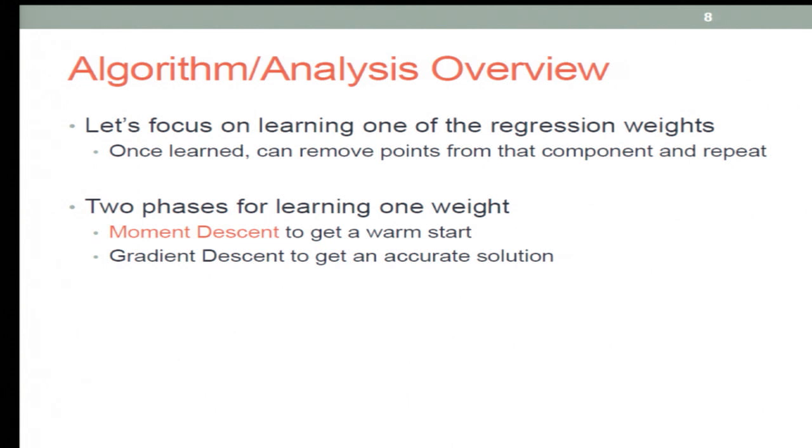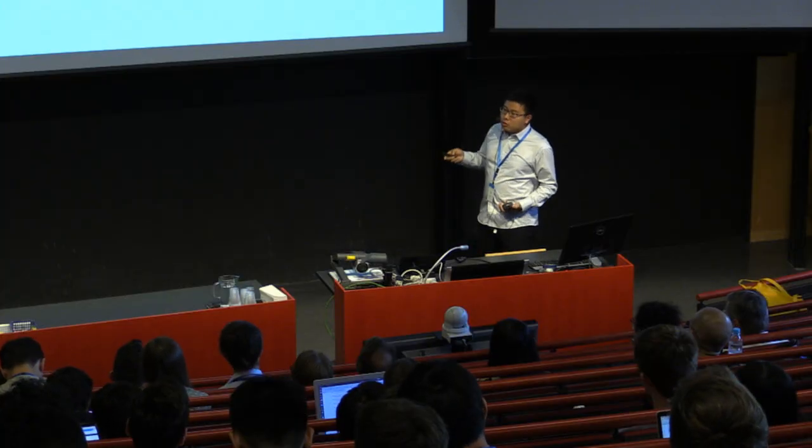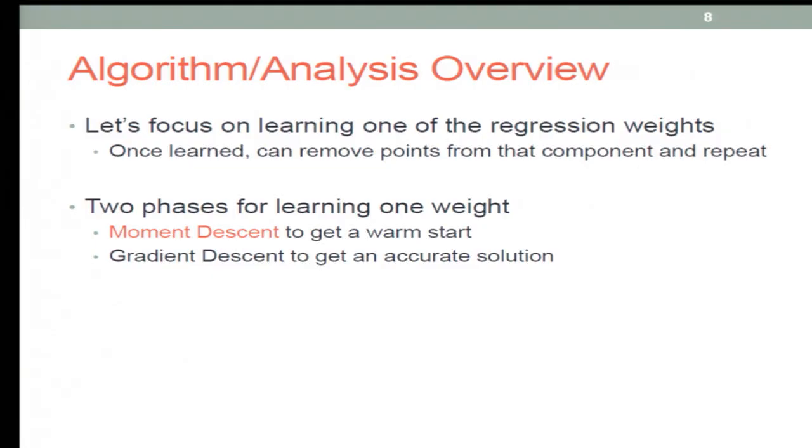Let's turn to the technical part. The first observation is that if you can learn one of the mixture components, you can just find the points that belong to this component, remove those points, and learn them one by one. So you only need to learn one of the mixture components. To do that, they use a two-phase algorithm. The first phase uses moment descent to get a warm start, and then uses gradient descent to get an accurate solution with only logarithmic dependence on epsilon.